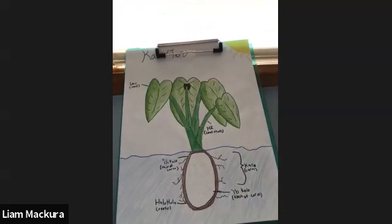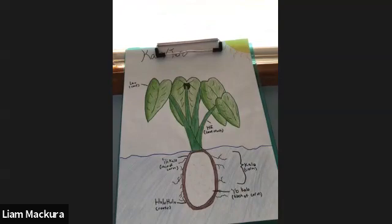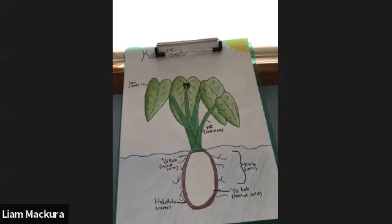So for my project, I made a diagram of kalo, or taro, and I made it to explain what kalo is and why it is important. Basically, kalo is really a food plant, and you can use many of the different parts of kalo for food — its roots, the corm, the leaves, and the leaf stalks.